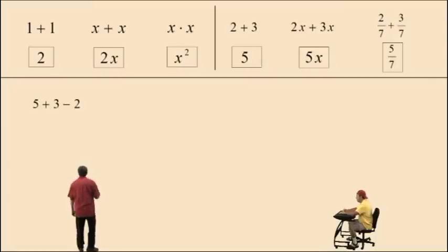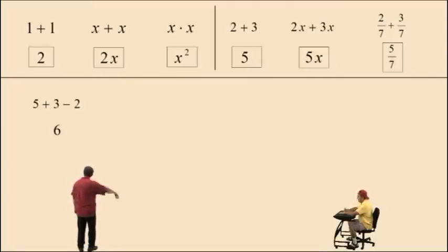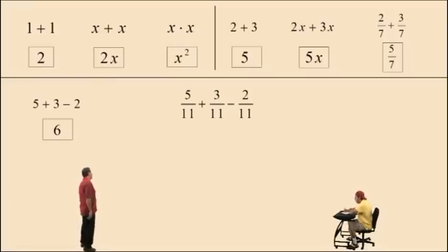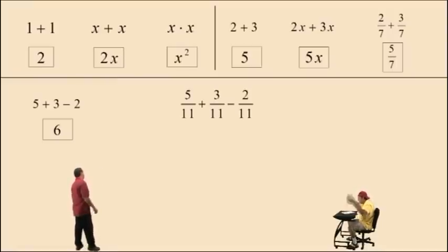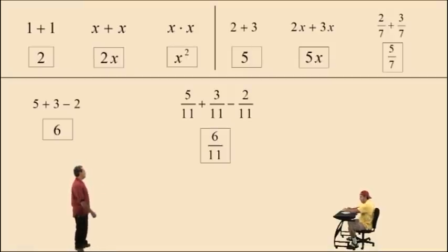So let's look at this one: 5 plus 3 subtract 2. Charlie, what's 5 plus 3 subtract 2? 6. Very nice there, Charlie, it's 6. Now Charlie, what's 5 elevenths plus 3 elevenths subtract 2 elevenths? 6 elevenths. That's it, 6 elevenths. Very nice there, Charlie.